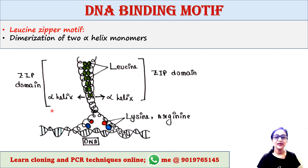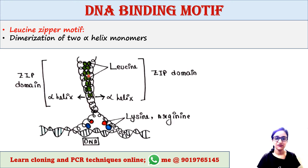One zip domain is present in the alpha helix of one monomer, and another zip domain is present in the alpha helix of the other monomer. The zip domain mainly contains leucine residues — that's why the name is leucine zipper motif.